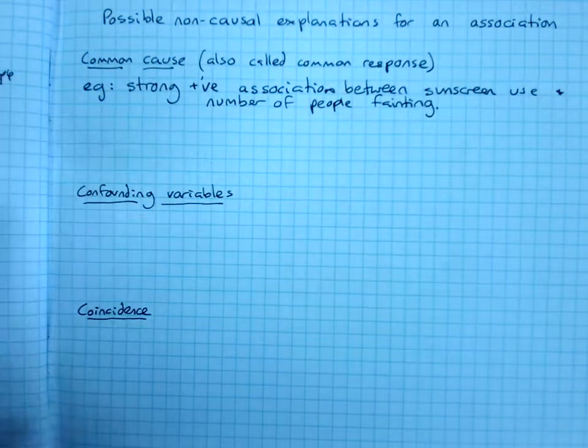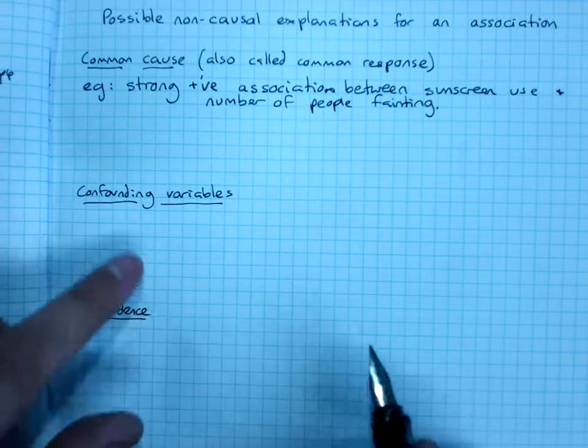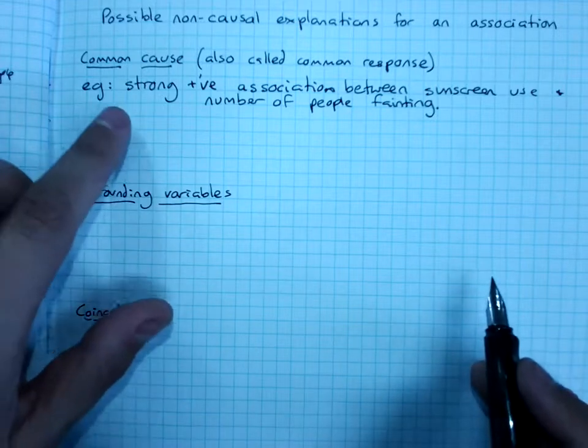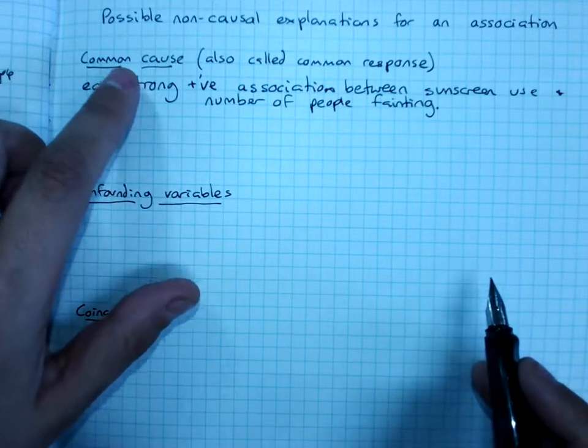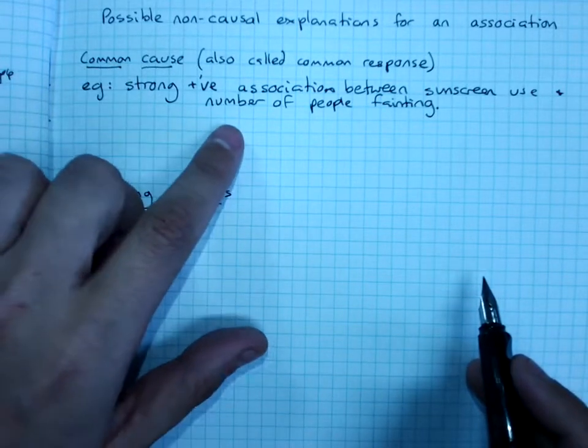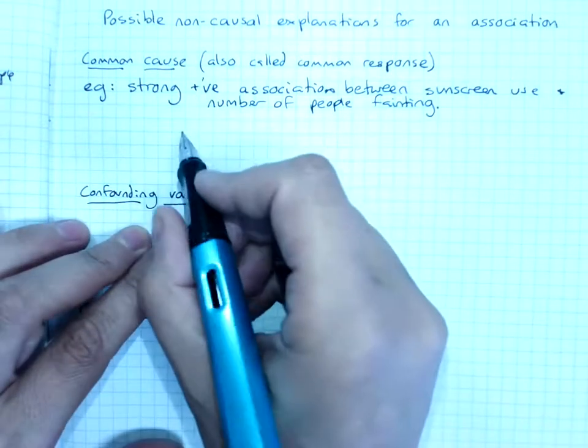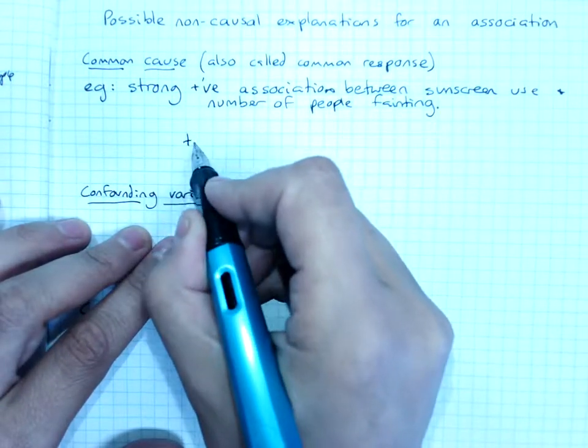Now, while I am allergic to sunscreen, most people aren't. So most people aren't putting on sunscreen and promptly fainting because the sunscreen caused them to faint. What's happening is one separate factor is causing both of those to rise. And if you're feeling very intelligent today, we can probably work out what it is. It's the temperature.